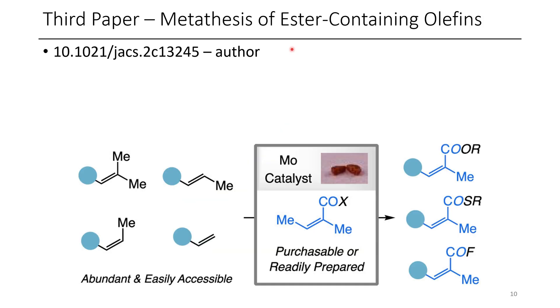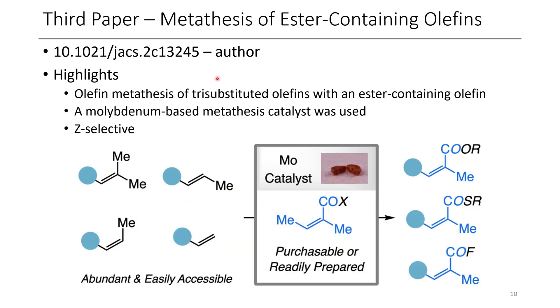The third paper for today is the metathesis of ester-containing olefins. Some highlights of this paper include olefin metathesis of tri-substituted olefins with an ester-containing olefin to afford Michael acceptor-type products. In this paper, a molybdenum-based metathesis catalyst was used as a means to form Z-alkenes. The idea in this paper is that it's easier to carry out a synthesis where you have an alkene like this through to the end, but then at the last stage you can do metathesis with another olefin containing a Michael acceptor, and this can put a Michael acceptor right on your final product. So this might be something really useful synthetically.